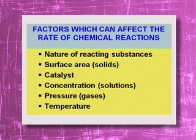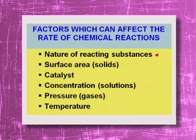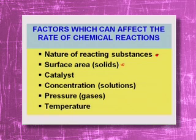Here we've listed all the factors that affect the rate at which a chemical reaction occurs. One: the nature of reacting substances — whether they are liquids, solids, or gases, and whether they are substances that are ready to react. Two: surface area, which we've demonstrated quite well. Three: catalyst. This is a substance that does not get consumed in the chemical reaction but speeds up the rate of reaction. You start with a certain amount of catalyst and you end up with that same amount.